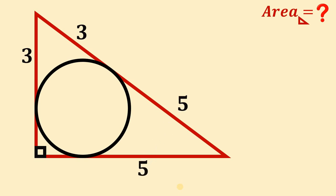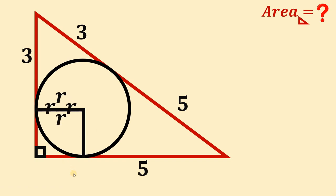Now let's draw the center of this circle by drawing some radii. Let's call this radius R. Since it forms a square, all of these sides must be the same — they are all R.